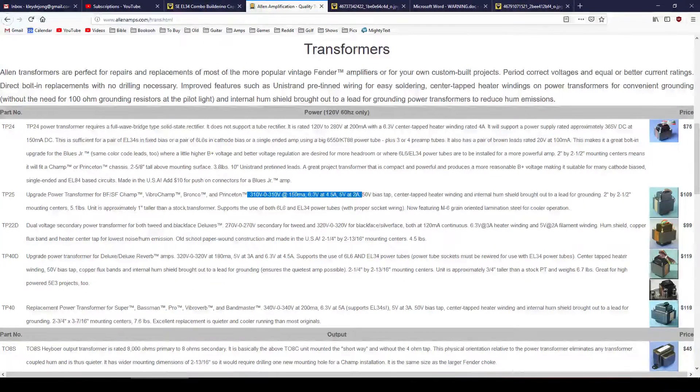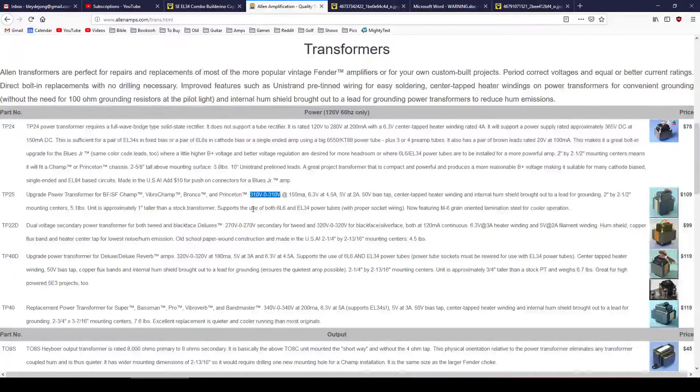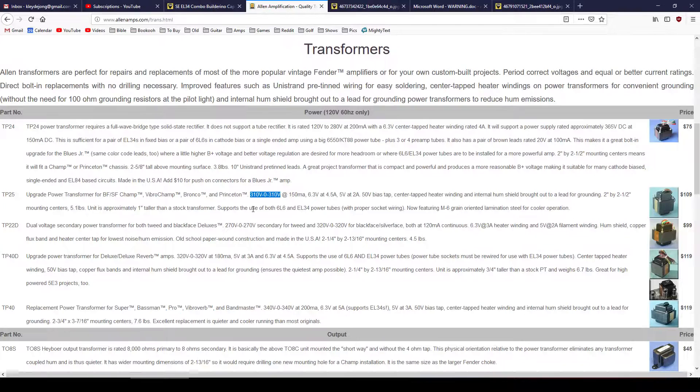So the power transformer that I had on hand is this Allen TP25. The primary information is highlighted here. We've got a 310, 0, 310 B+, at 150 milliamps. So the voltage here, this means we're putting out, we've got 310 on one side, a center tap, and a 310 on the other side. So that's going to be, if you put 120 volts on the primary, it's going to produce that on the secondary. And then that can help you estimate what kind of voltage you're going to get in your circuit if you're using Ohm's law. If you understand how much current is going to be drawn through all of the tubes, and then also what kind of target voltage you want, you can use that to set your B-plus step-down resistors. Now this 150 milliamps is also important because that helps us to know what kind of power tube we can draw.